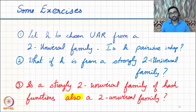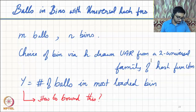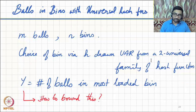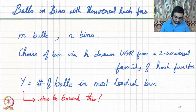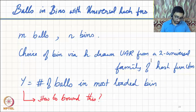Now that we've defined universal families of hash functions, how useful are they? Our first concern is their application in the fundamental balls and bins context. What happens when we replace the notion of balls choosing bins uniformly at random with balls choosing their bins based on a hash function drawn uniformly at random from a two-universal family of hash functions? We have m balls, n bins, and we use such a hash function h to assign each ball to a bin.